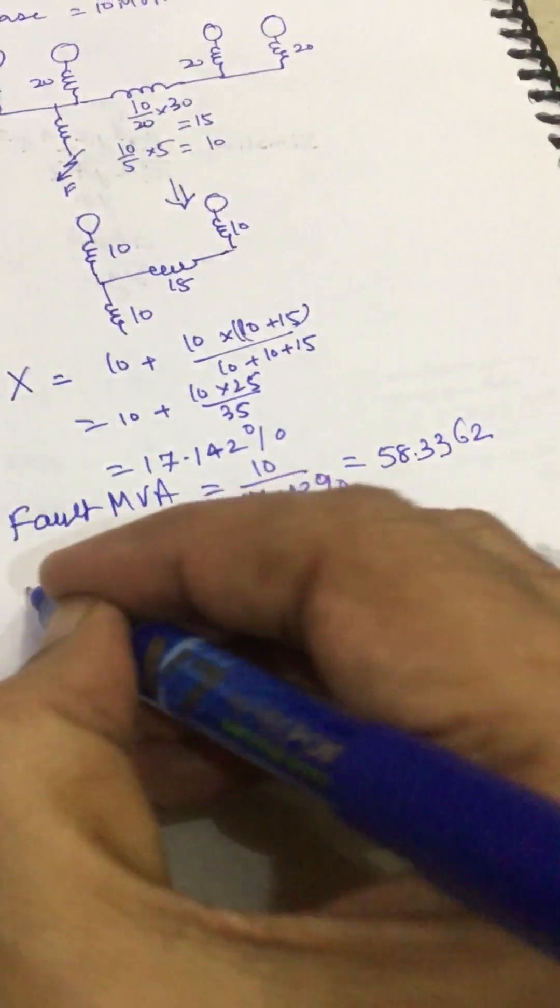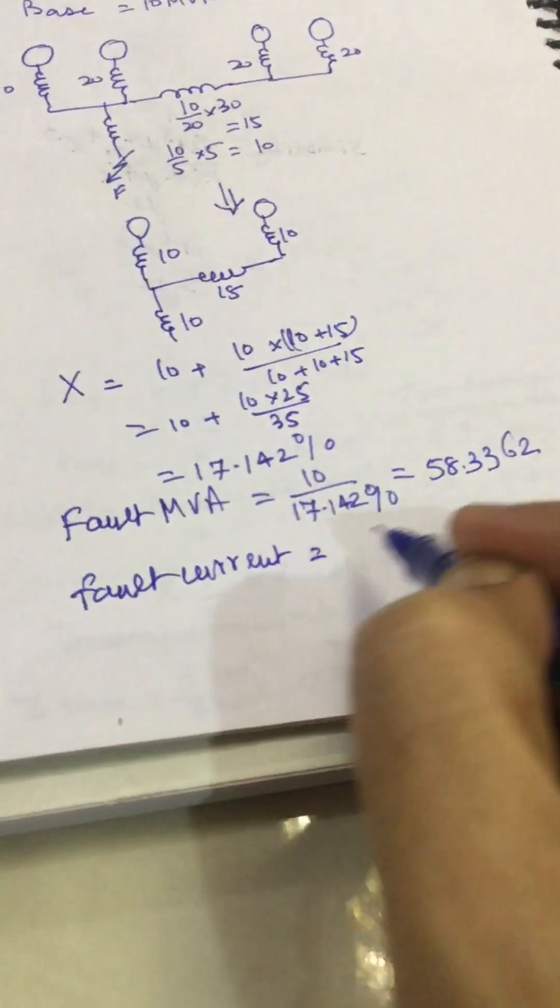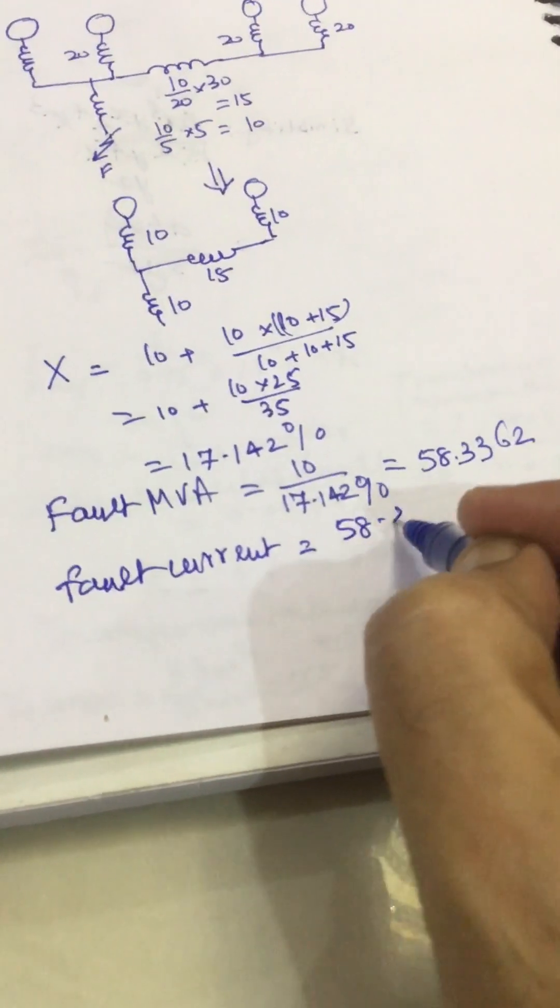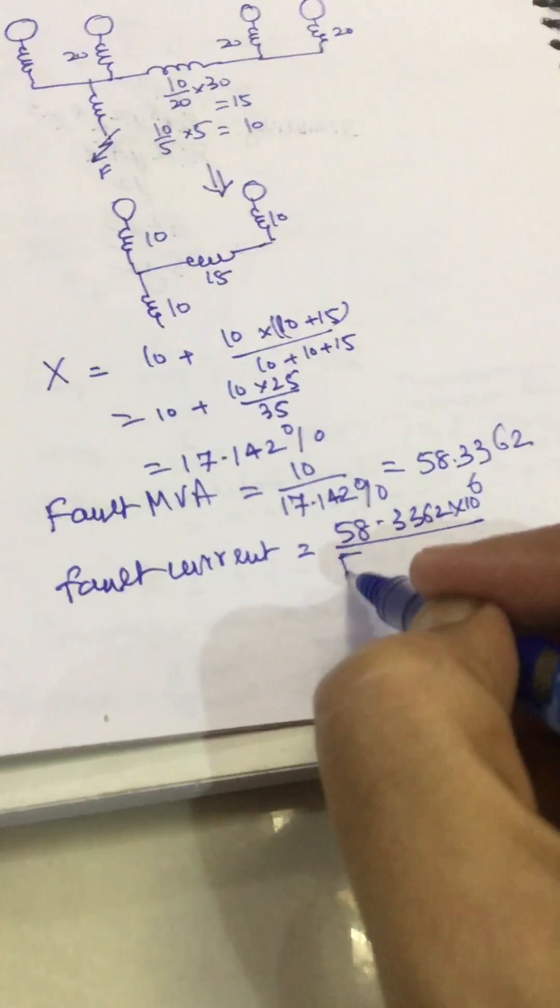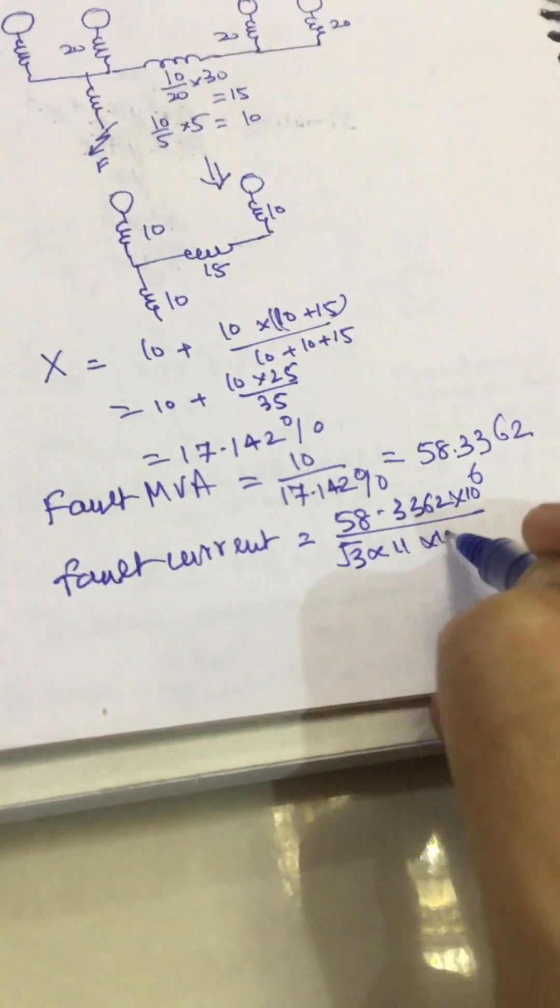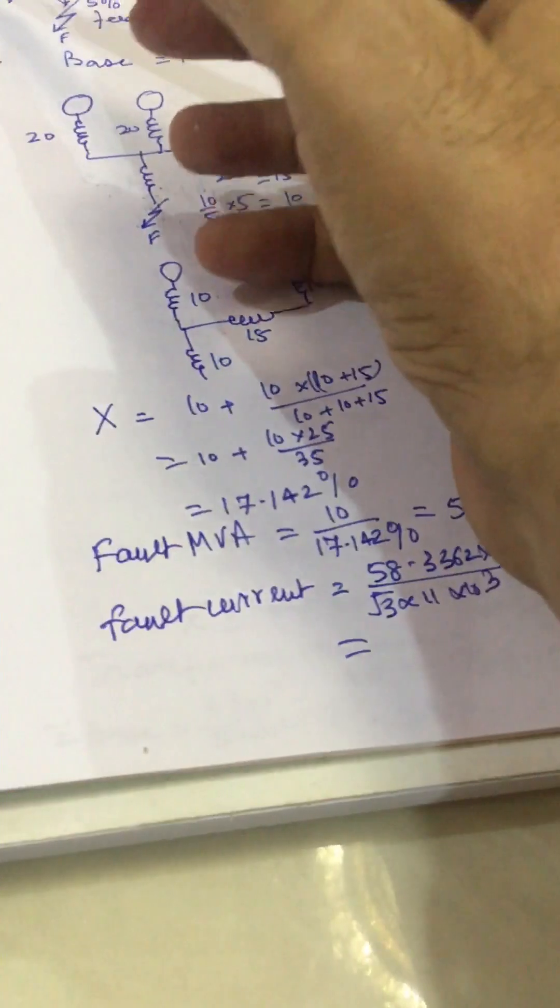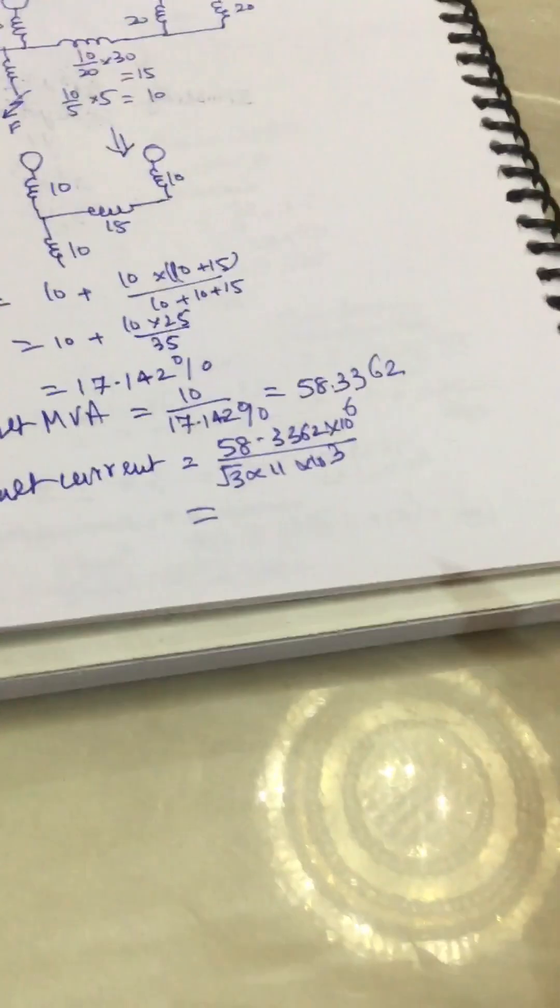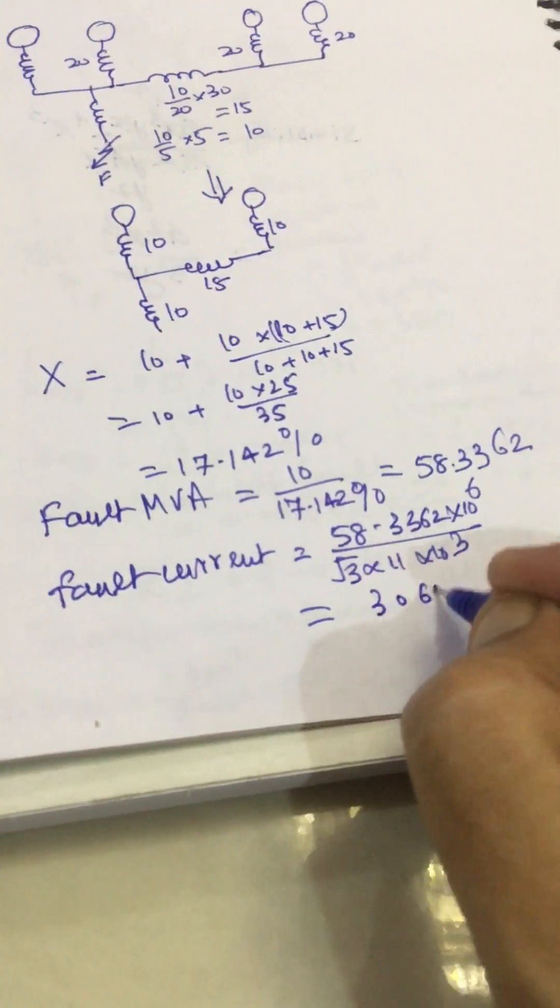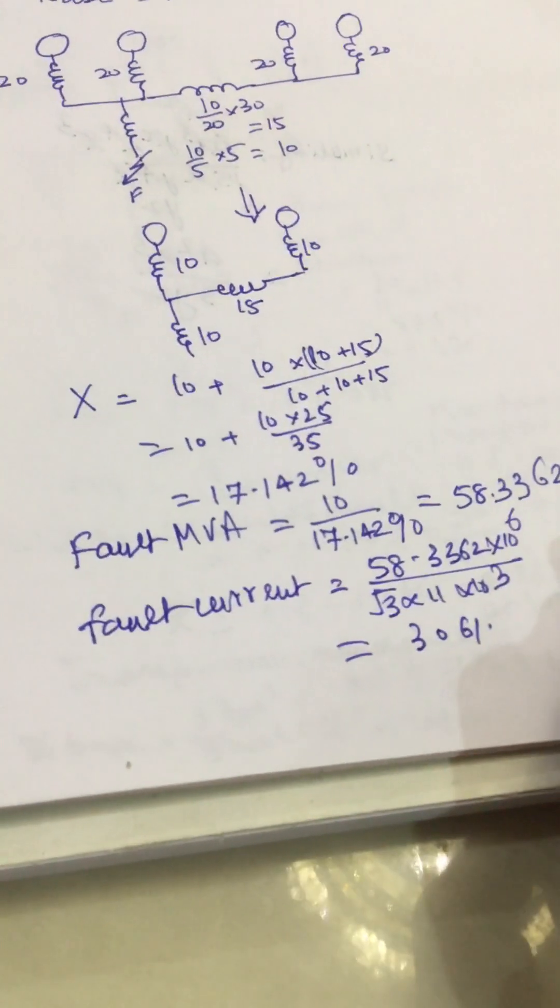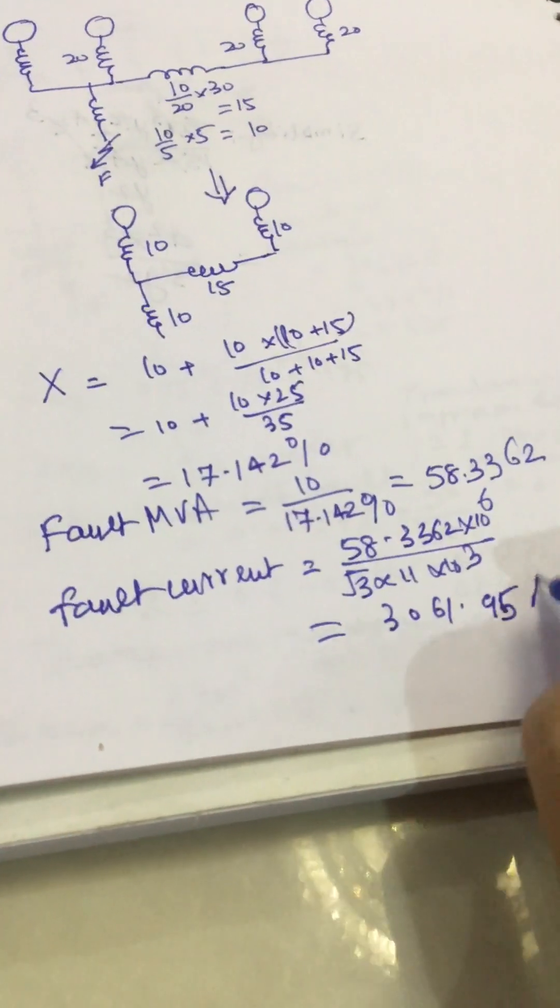Fault current will be equal to 58.3362 multiplied by 10 to power 6 divided by root 3 into 11 raised to power 10 because the voltage is 11 KV. Solving this we get the fault current as 3061.95.